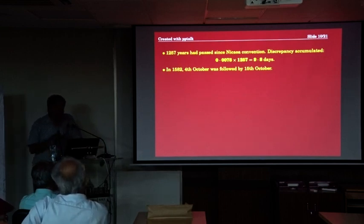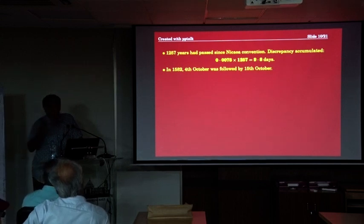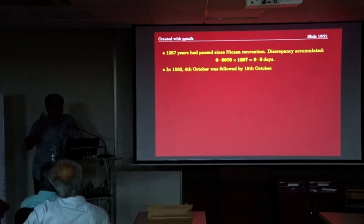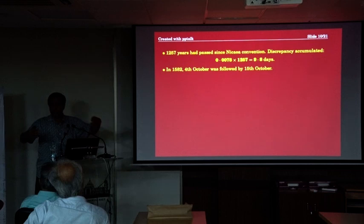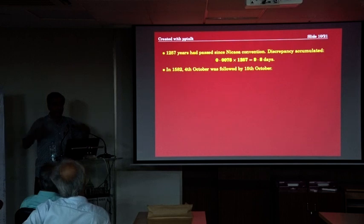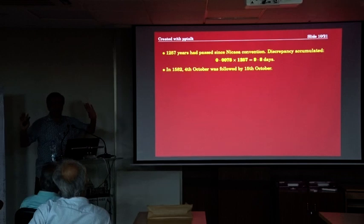Now on the internet there are beautiful sites — one of them is called timeanddate.com, or maybe dateandtime.com, I can never remember. But if you go there, you can give the name of a country and year and see the calendar. Type Italy, 1582 October, and you'll see 1, 2, 3, 4, 15, 16 — not advisable for little children learning their numbers.